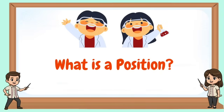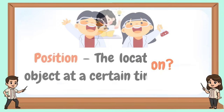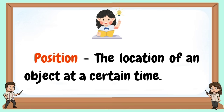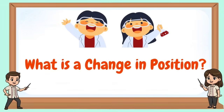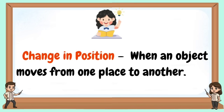What is a position? Position is the location of an object at a certain time. What is a change in position? Change in position is when an object moves from one place to another.